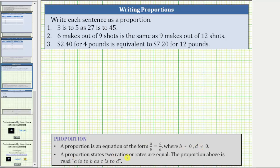A proportion states that two ratios or rates are equal. We read this proportion as A is to B as C is to D.